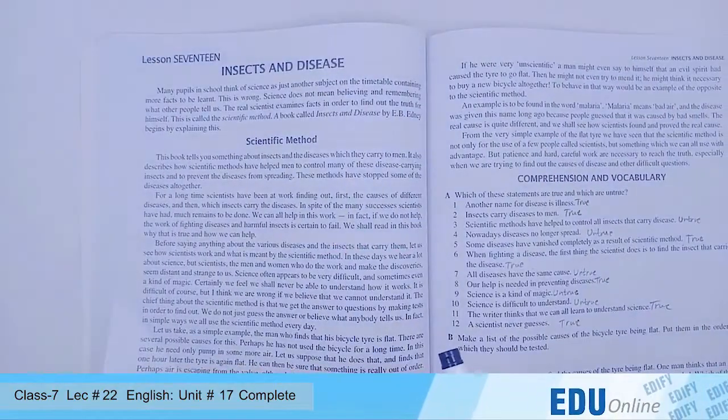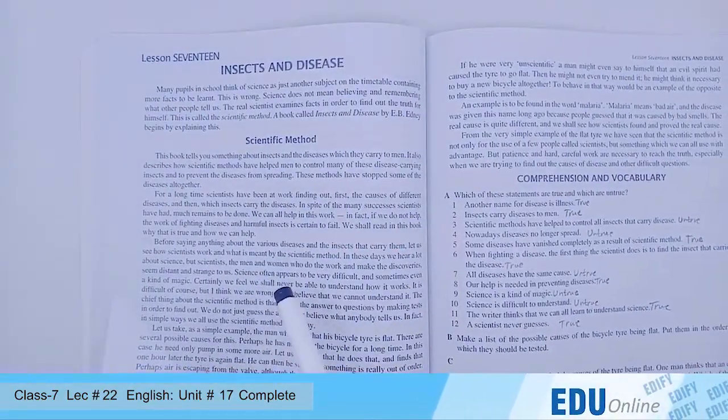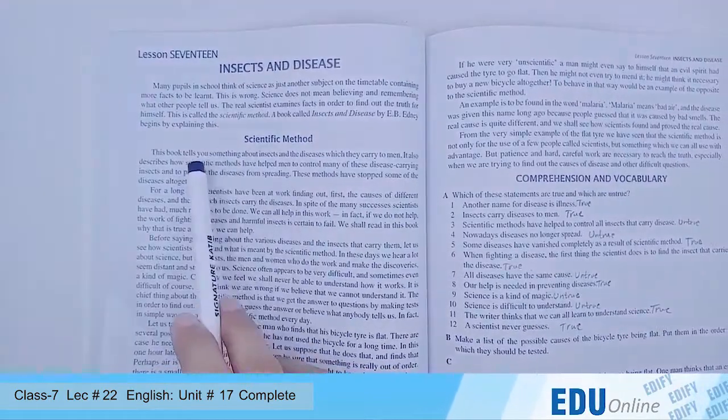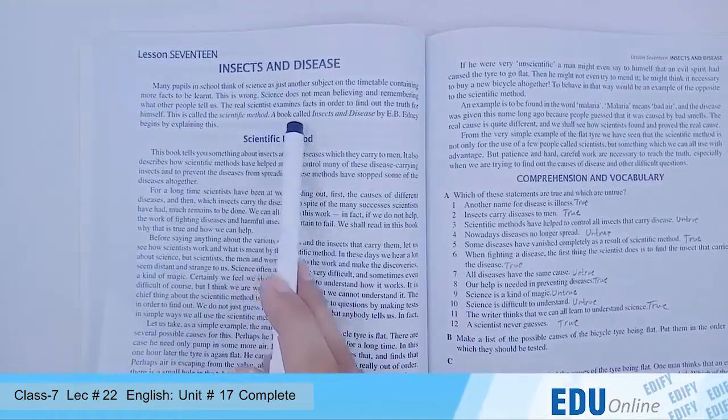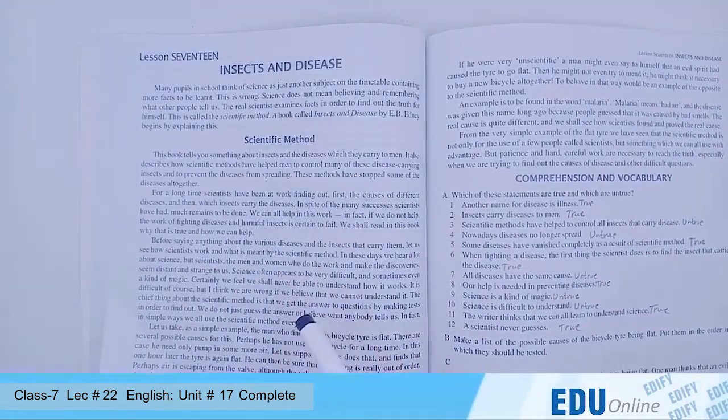Hello class. This is class 7, collection number 22, English lesson number 17: Insects and Diseases. We will do this lesson today.